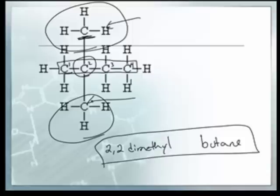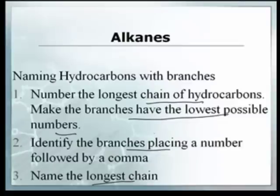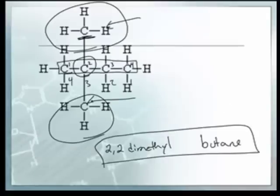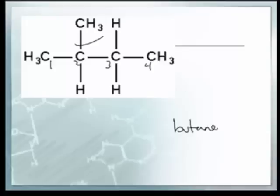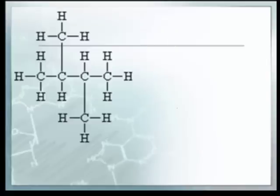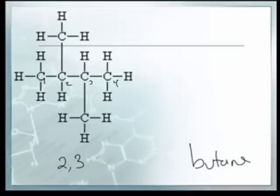...dimethylbutane. Why not start numbering from the other end? Because the rule says you want the lowest numbers possible, and two is smaller than three. Here's another example: the longest chain is one, two, three, four — also butane. There's only one branch and it's a methyl group, so it's 2-methylbutane. Here's a more complex one — still one, two, three, four carbons — so the last name is still butane, and this will be 2,3-di...